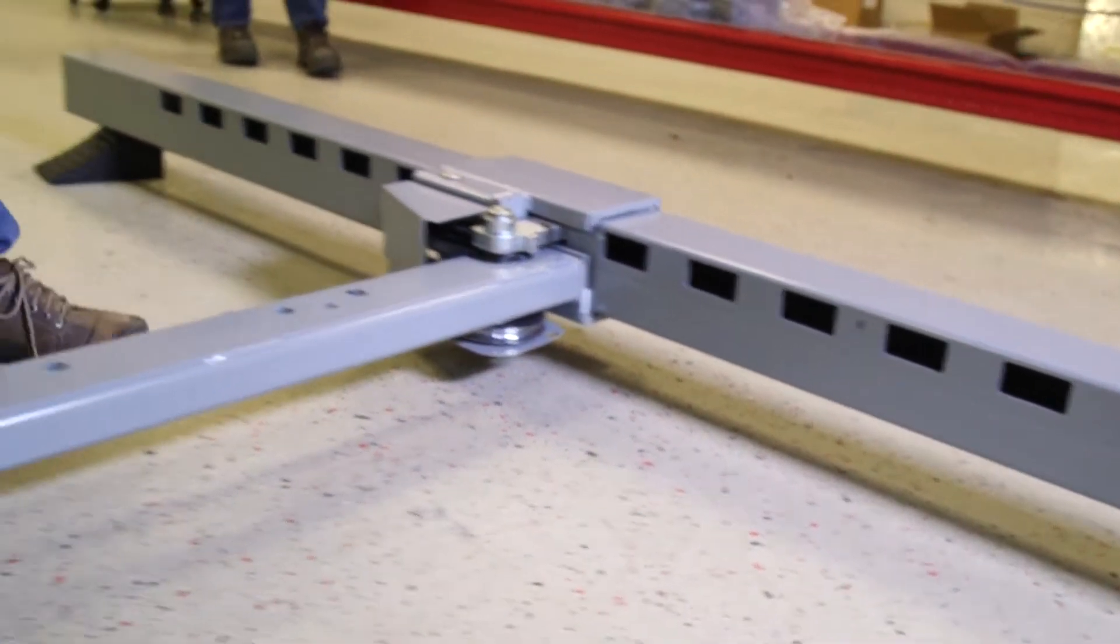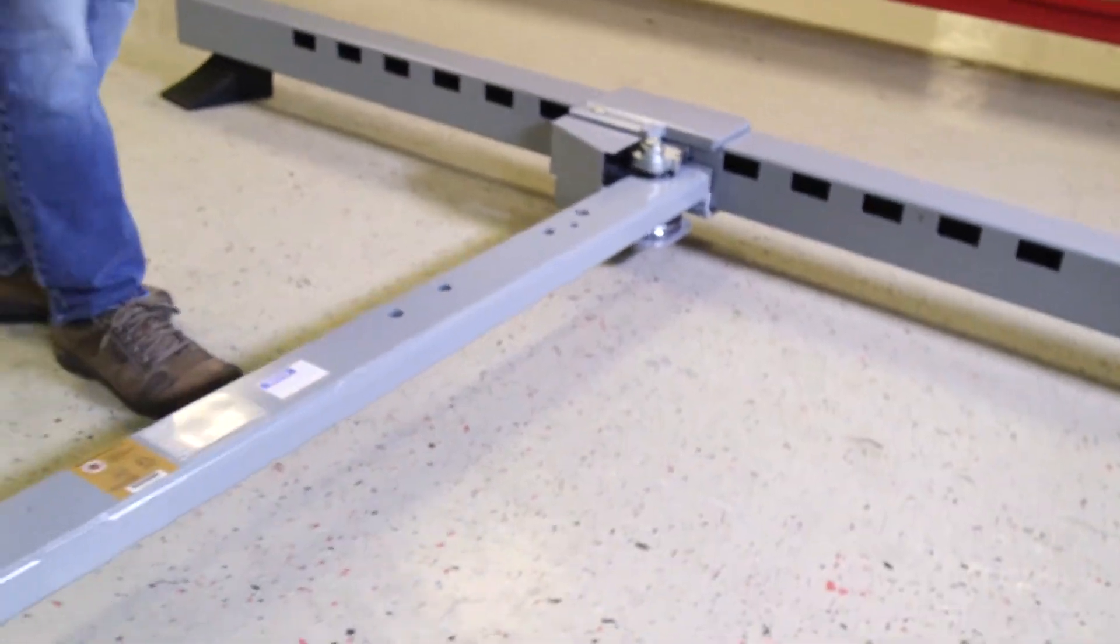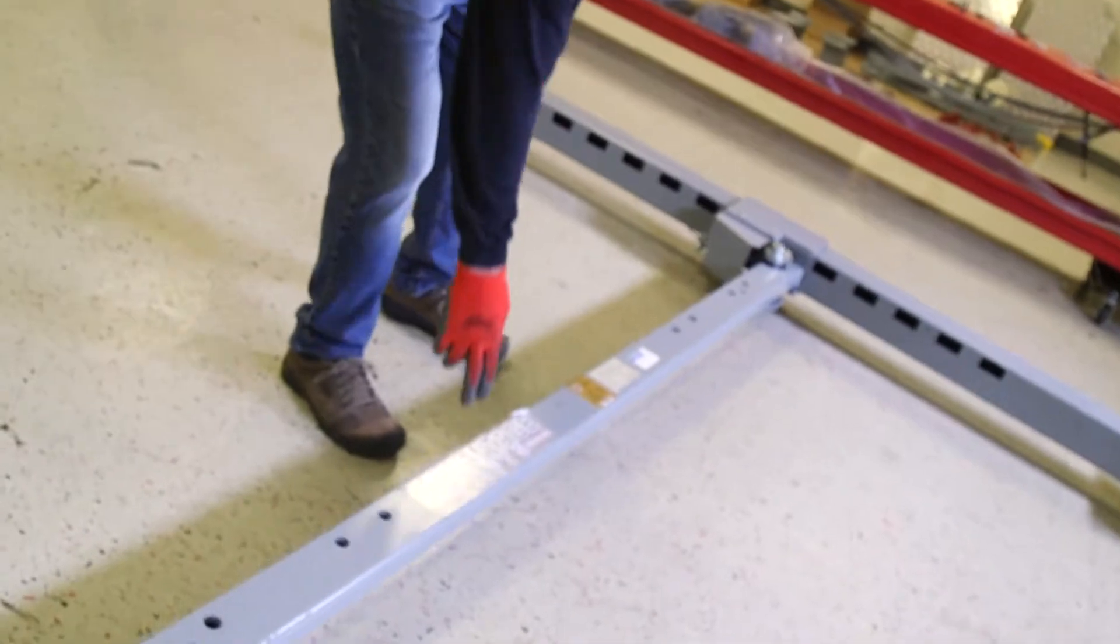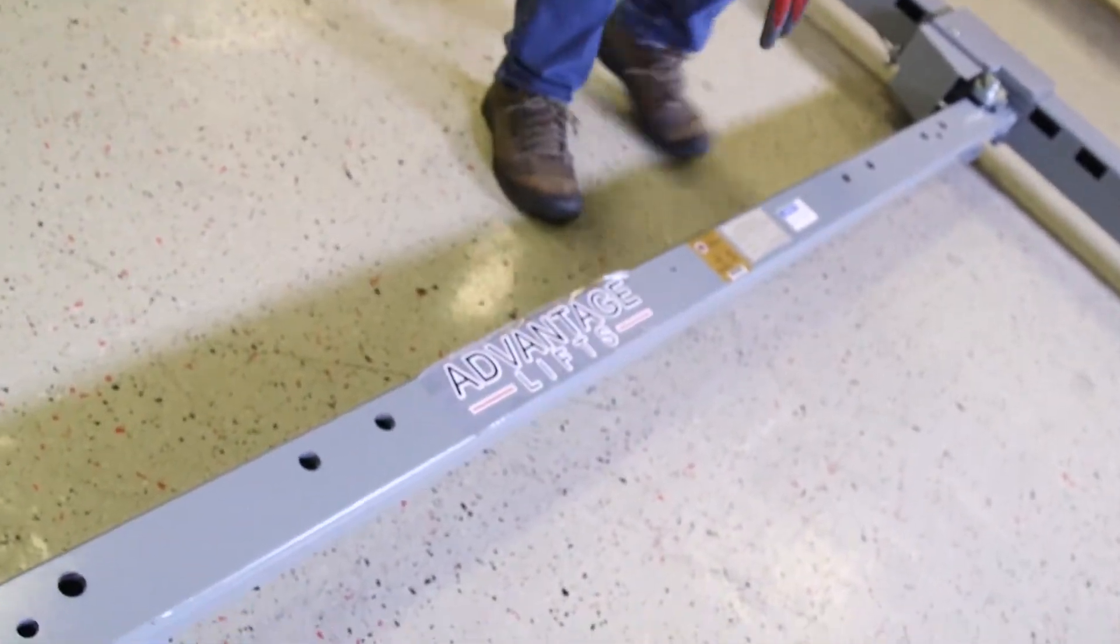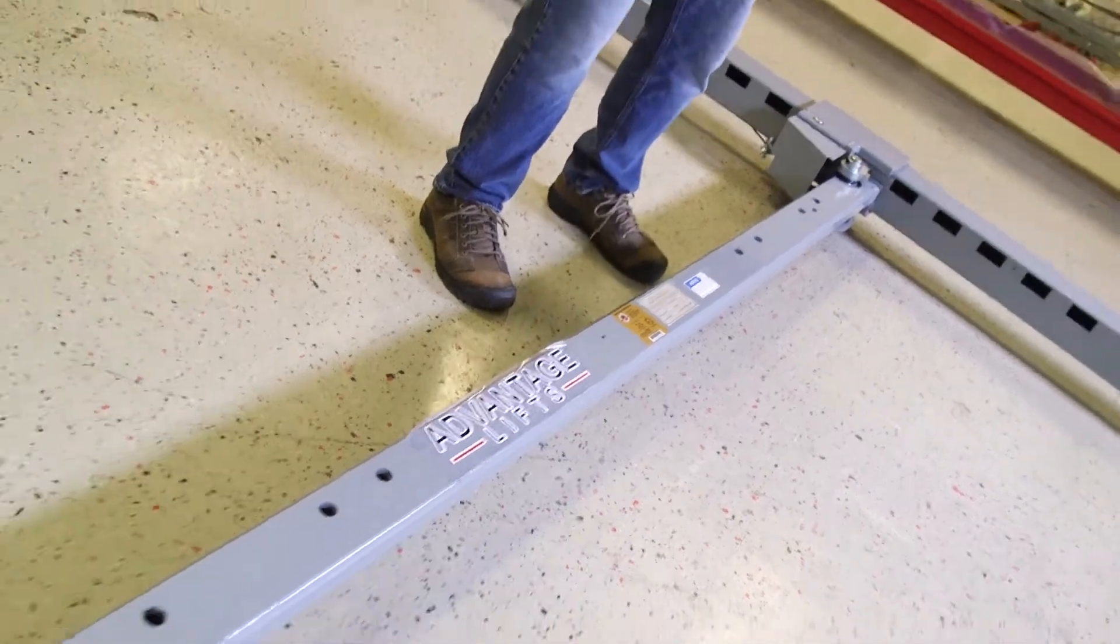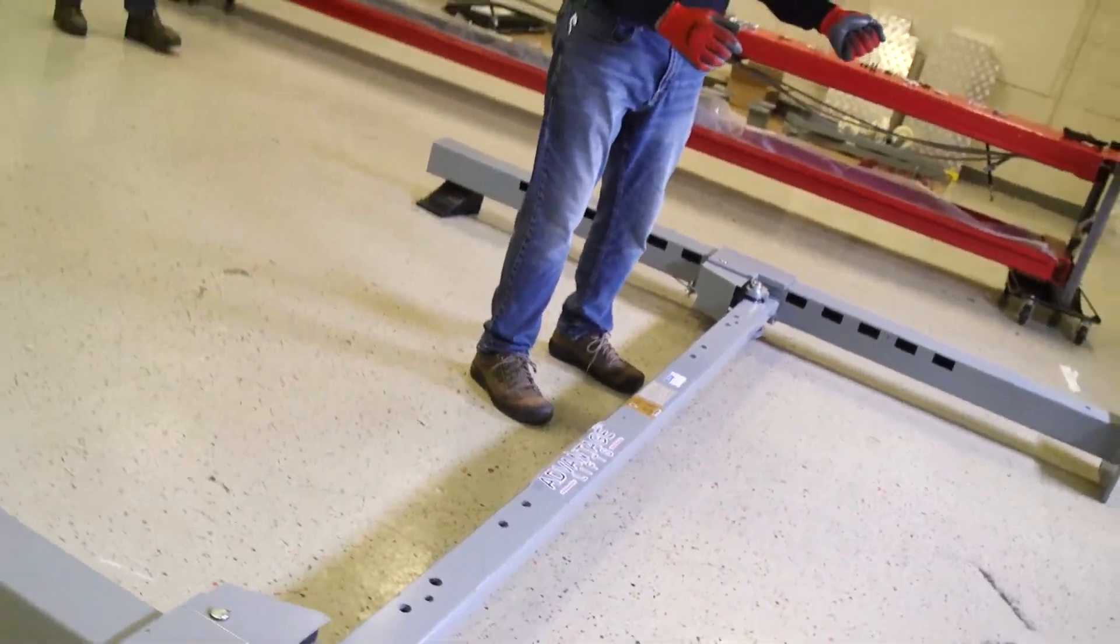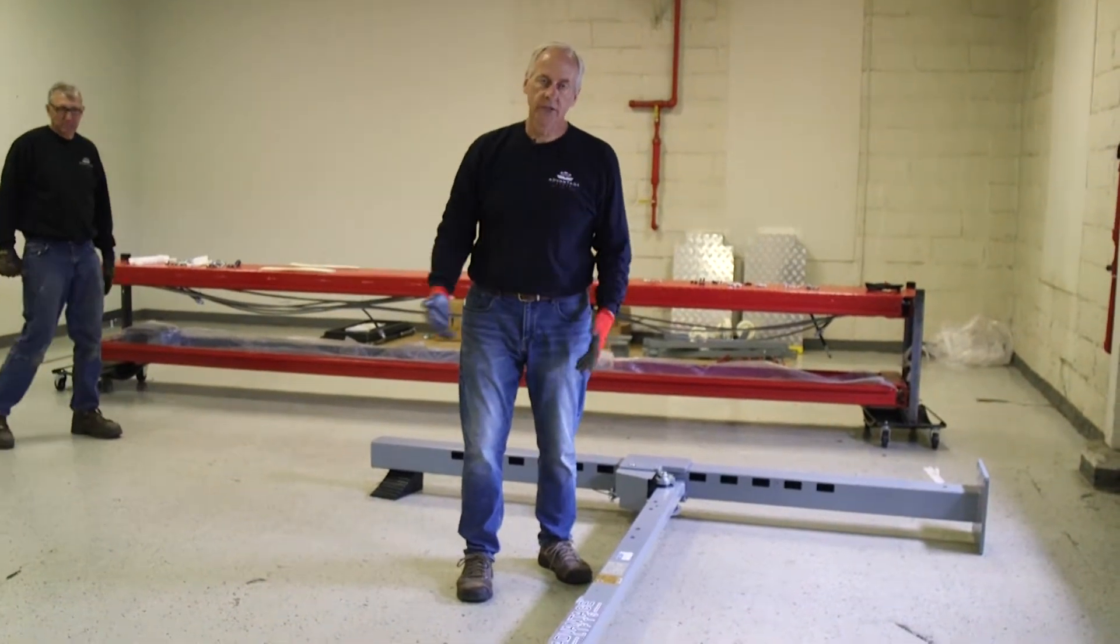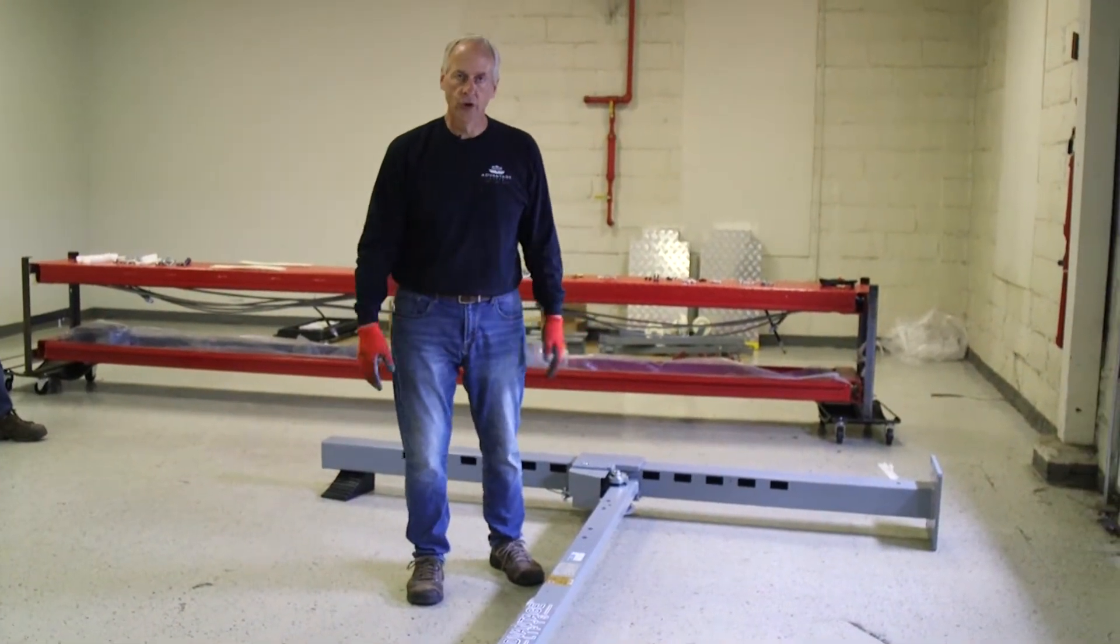And you know there is no right or left cross arm, so either cross arm will work. But you just want to have, if you like to have your Advantage lift label, your ALI certificate, and your serial number facing toward the garage door, then that's great. Put it on this direction. If you want it facing a wall in the front of the garage, then you can do it that way. It's your choice on that.